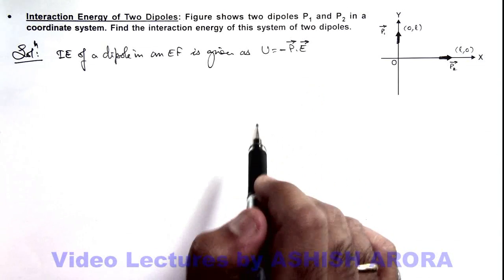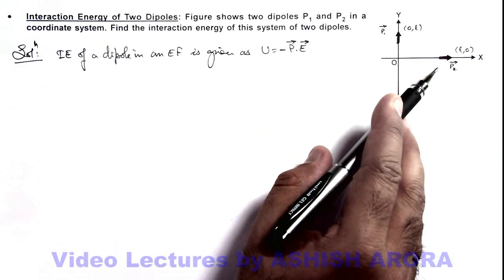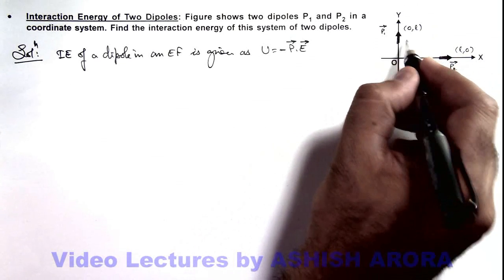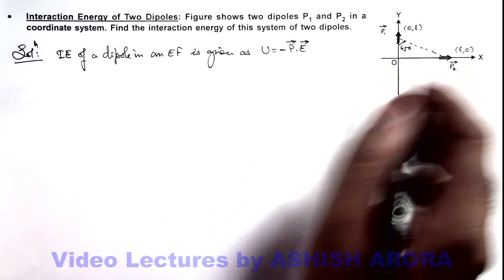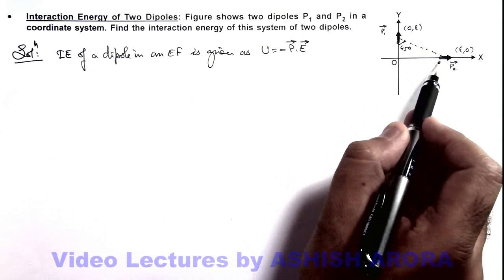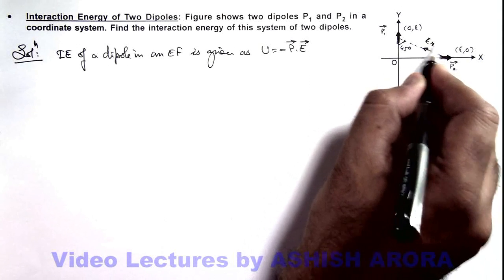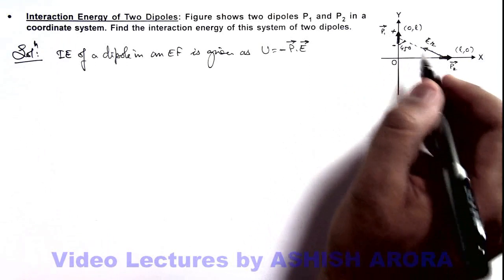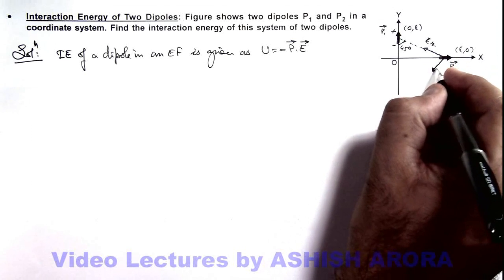In this situation, first we can calculate the electric field at the location of p2 due to p1. Due to p1, if we analyze, this angle will be 45 degrees, which is taken from the axis of the dipole. With respect to this dipole, the electric field E1 is in the radial direction, which is Er, and as the negative charge is closer, Er will be directed towards p1.